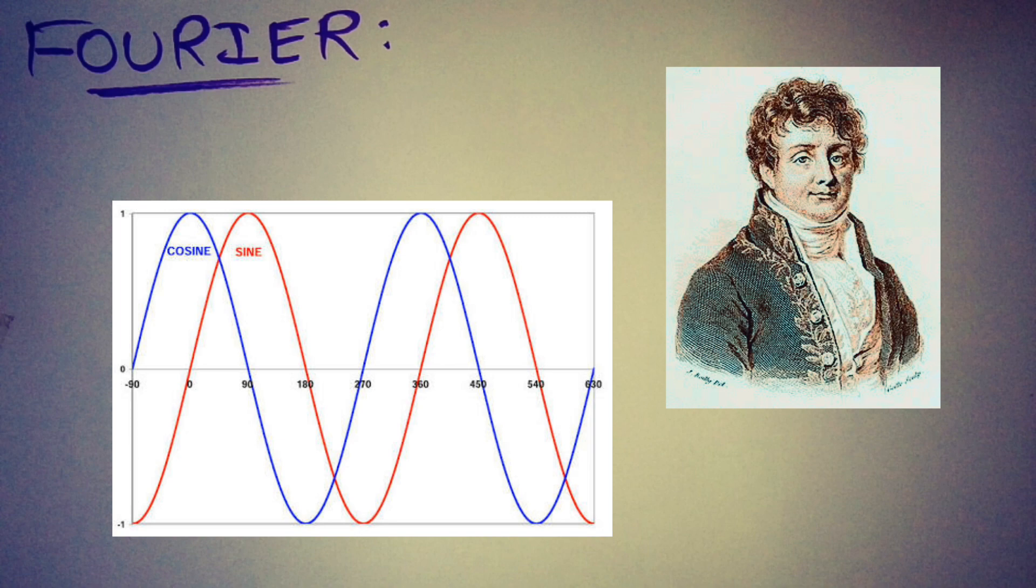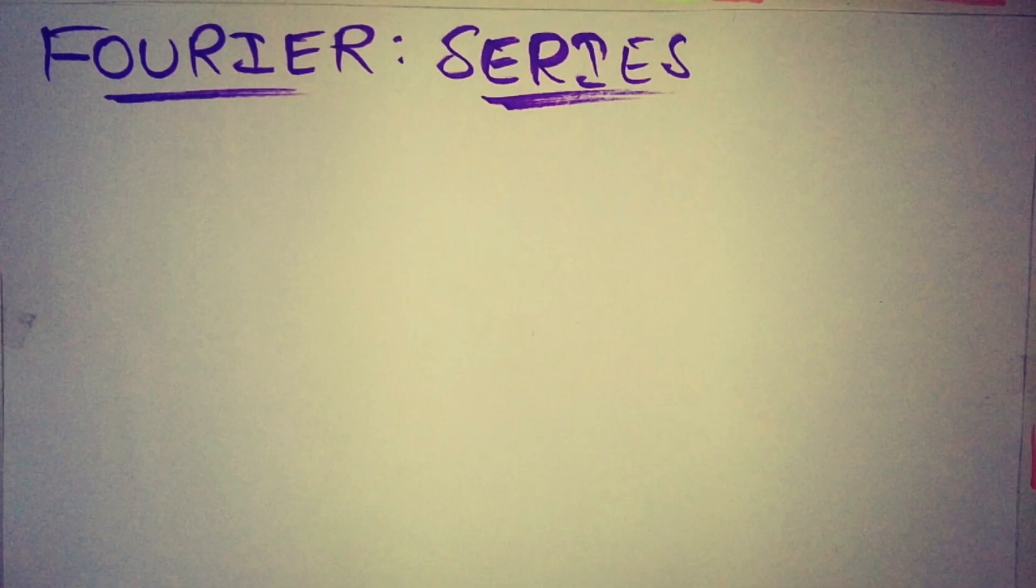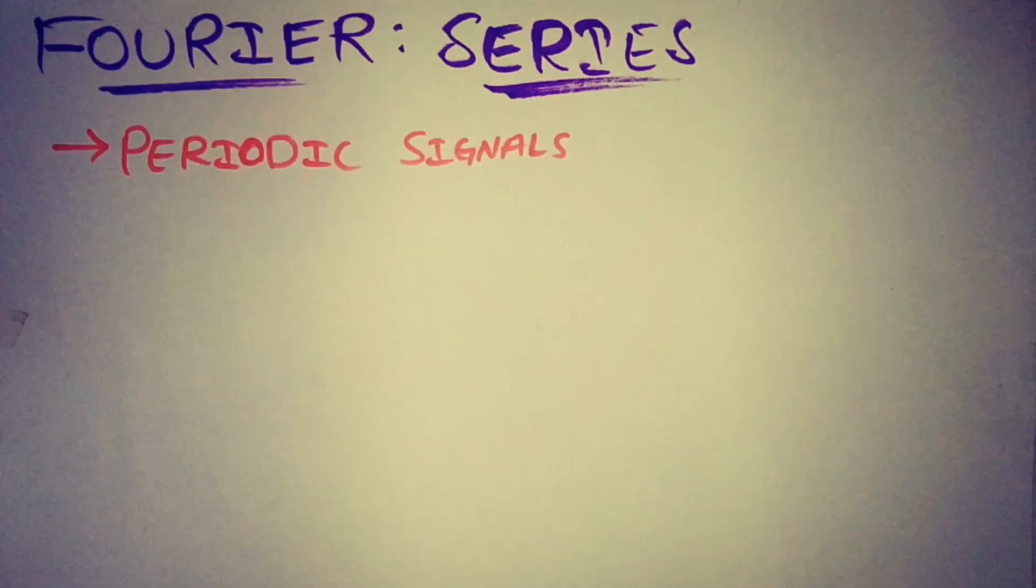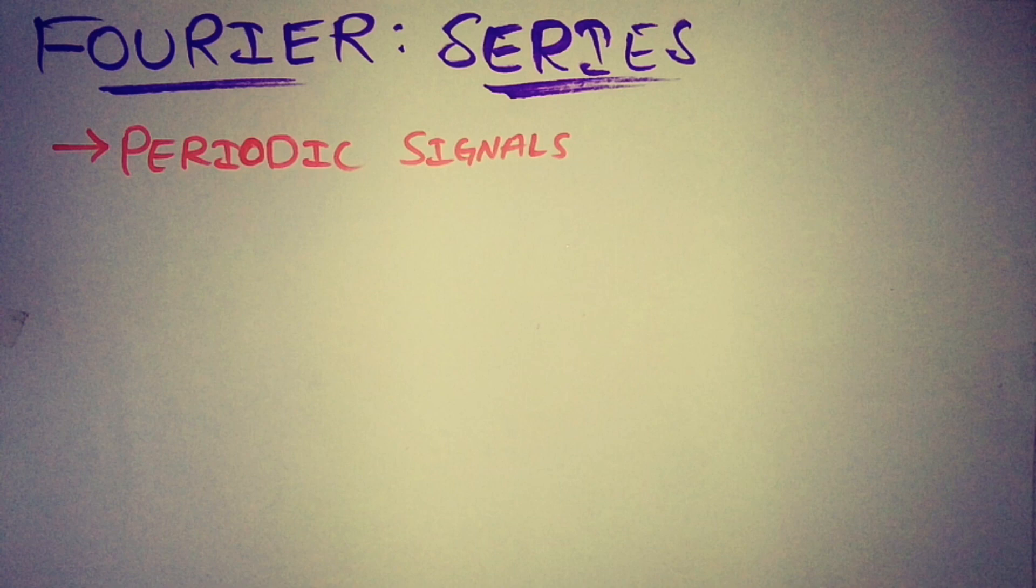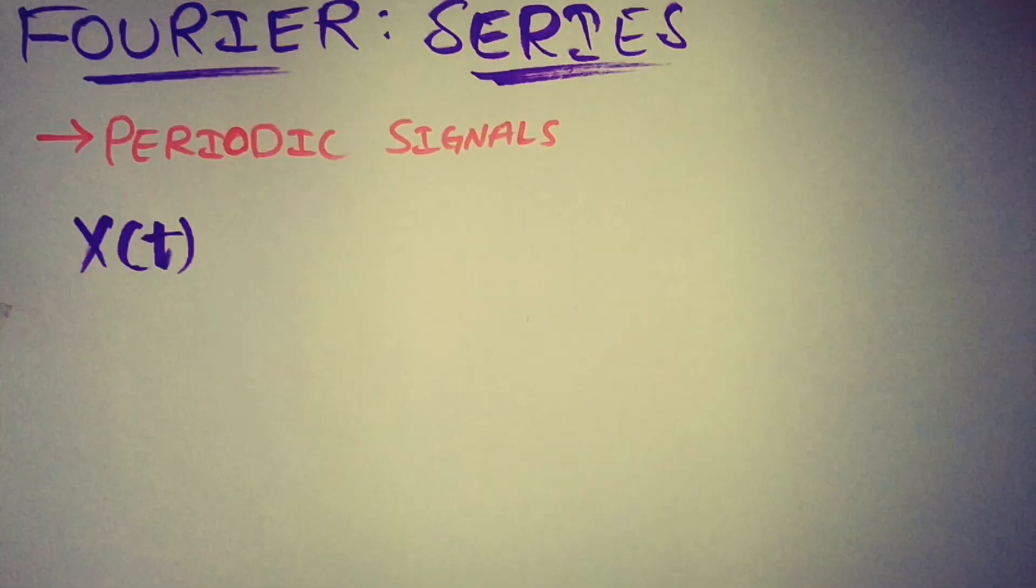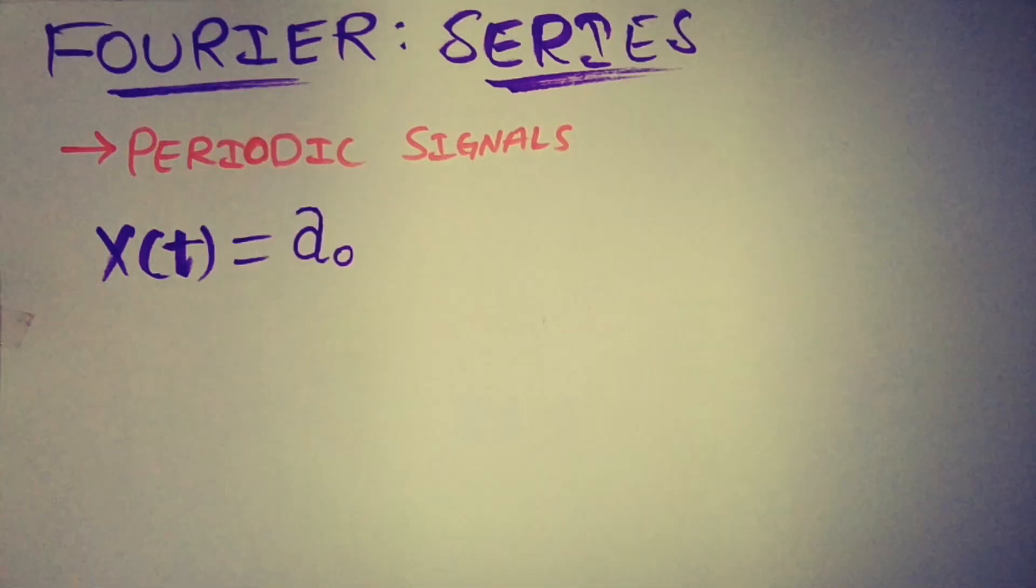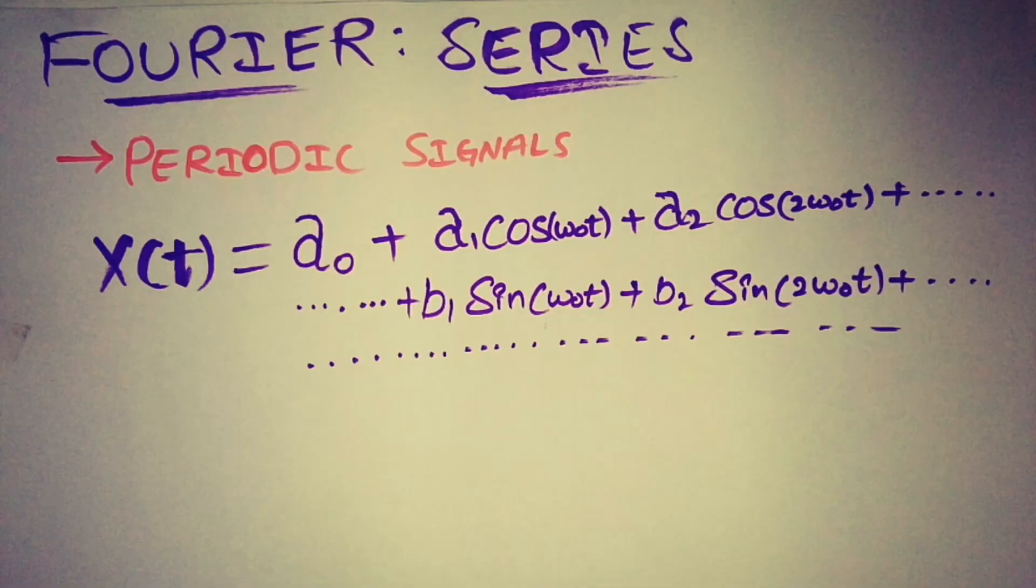Fourier series is a part of Fourier theory and states that any periodic signal can be decomposed into sine and cosine whose frequency is the integer multiple of fundamental frequency. If x of t is a periodic signal, it can be expressed as sum of constant amplitude cosines and sines.